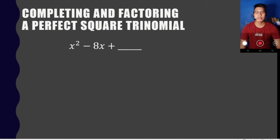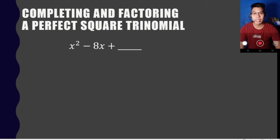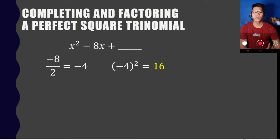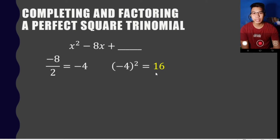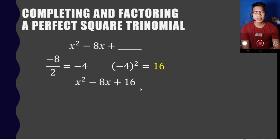Let's have another example. Suppose we are given x squared minus 8x plus blank. We get the numerical coefficient of the middle term, which is negative 8, and divide it by 2, giving negative 4. We then square it: negative 4 quantity squared equals positive 16. So 16 is our third term, giving us x squared minus 8x plus 16.